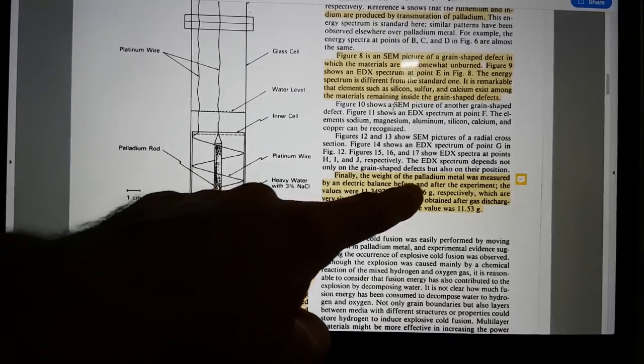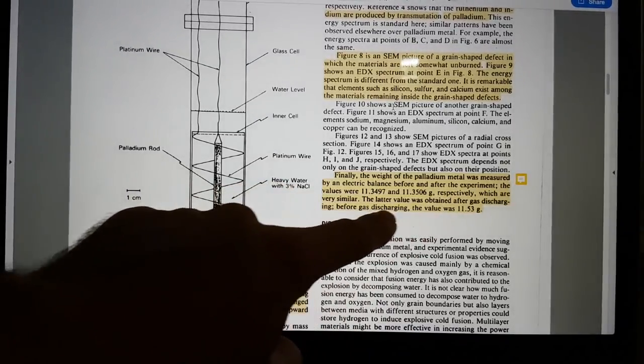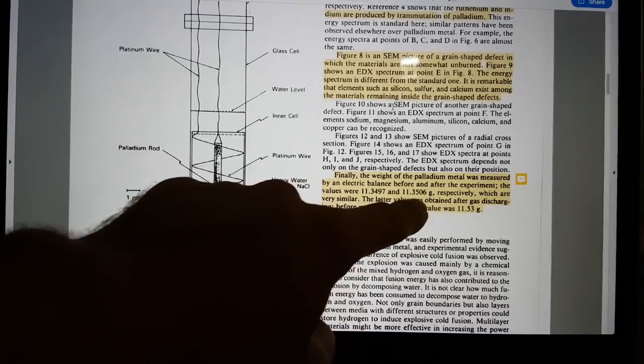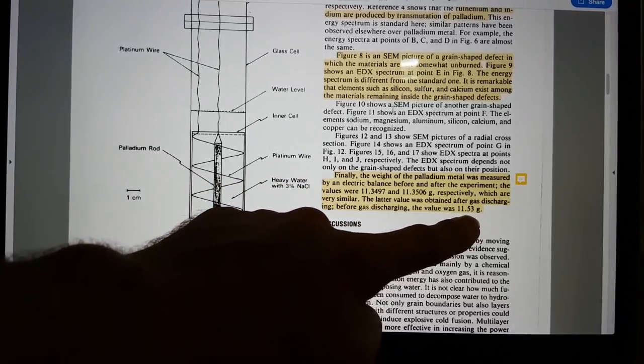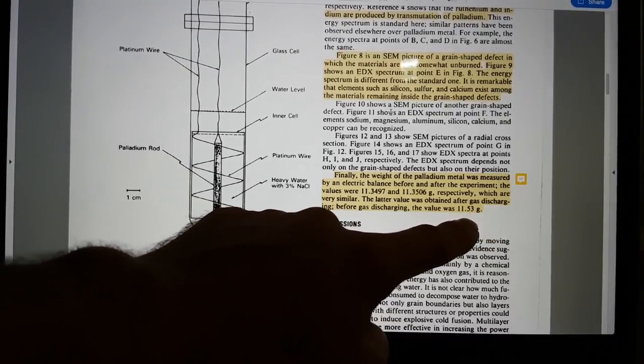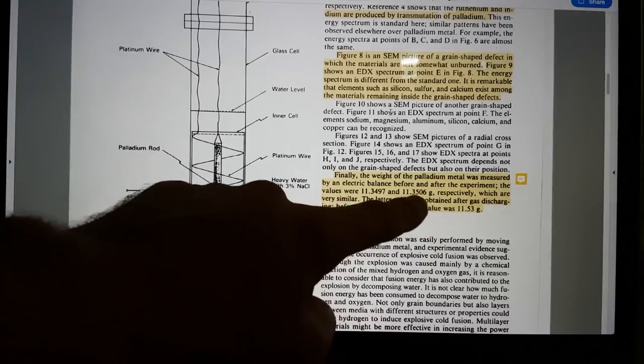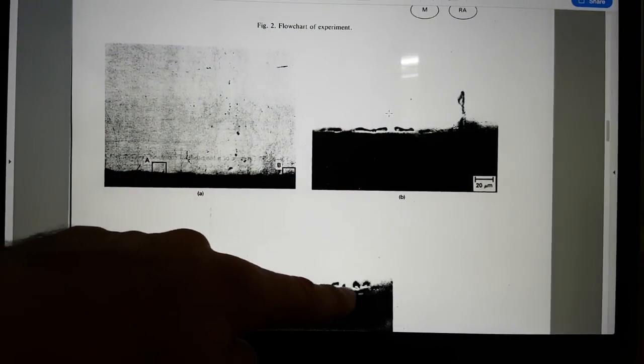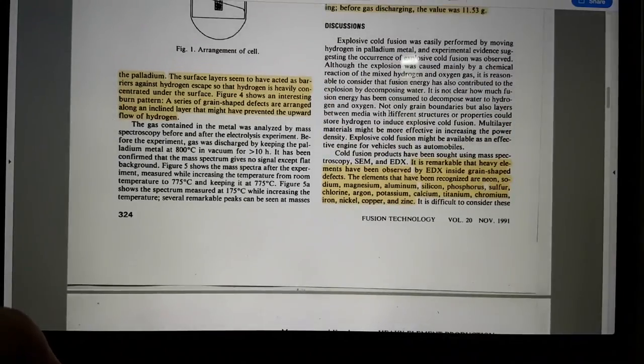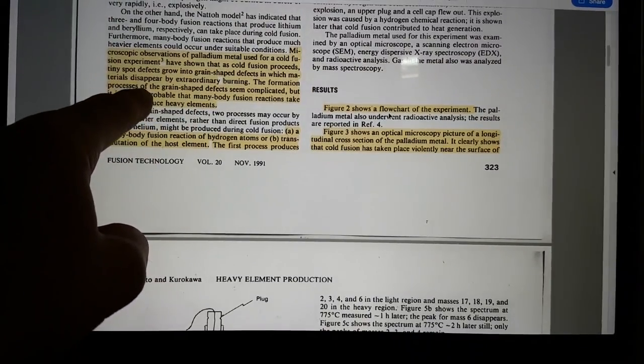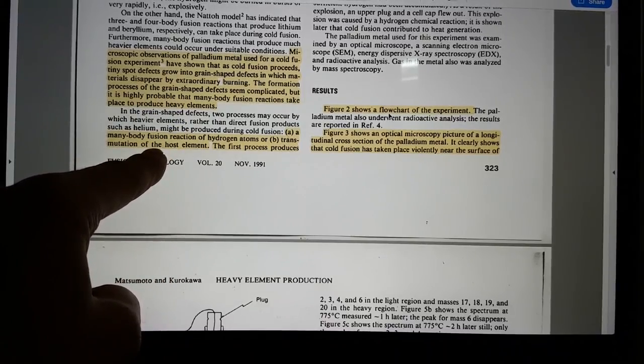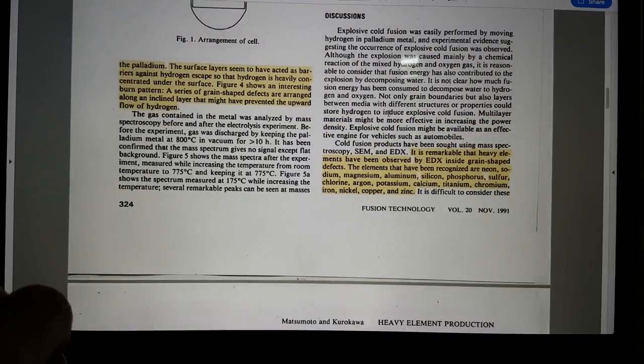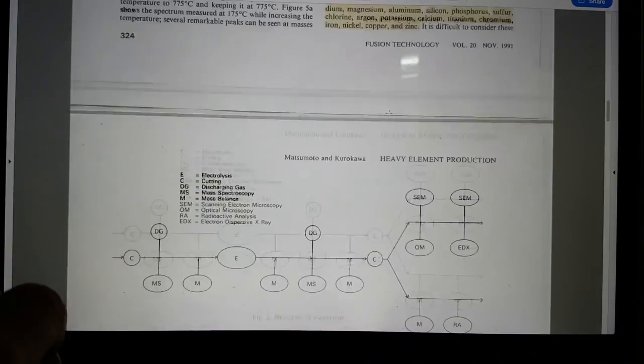He then comes down to here, finally, the weight of the palladium metal was measured by an electric balance before and after the experiment. Values were before 11.3497 and afterwards 11.3506 grams. He degassed before doing that. Prior to degassing, it was 11.53 grams. So you can see there was a lot of gas held in that material, whatever that gas was. And after the degassing, it was still heavier, despite the fact that areas of the material had basically, in his own words, been disappeared and basically gone, burnt out as he calls it.